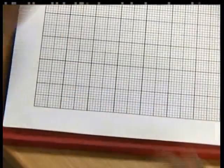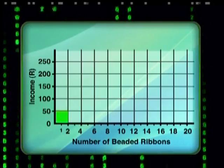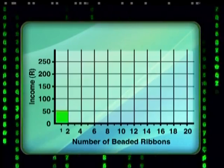It looks like you're all set to draw. You've chosen your axes correctly — make sure that you choose the best scale. Your graph must be as big as possible on both axes. I've noticed that I need to plot my input values from 0 to 20 and my output values from 0 to 250. I'll turn my graph paper so that the longer side is horizontal. On my horizontal axis, one large block will represent two ribbons. And on my vertical axis, one large block will represent 50 rand.